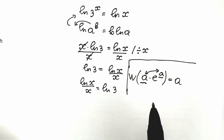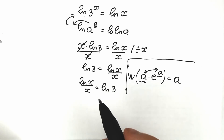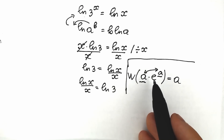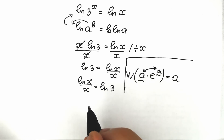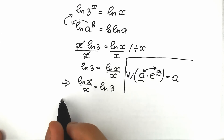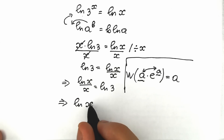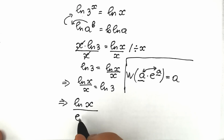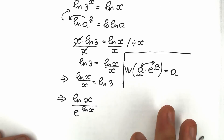Let's try to create this expression on the left side. We need e, so instead of x let's write e to the power natural log x — it changes nothing, since e^(ln x) = x. So now we have natural log x over e to the power natural log x equal to natural log 3.